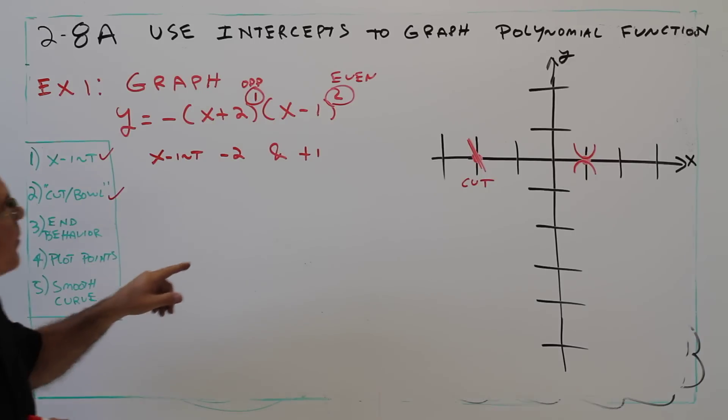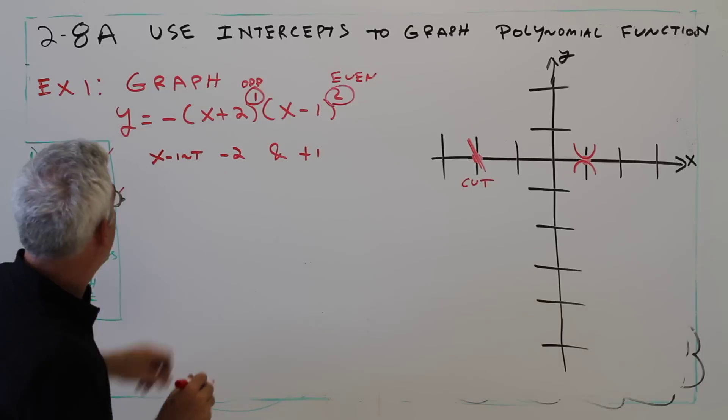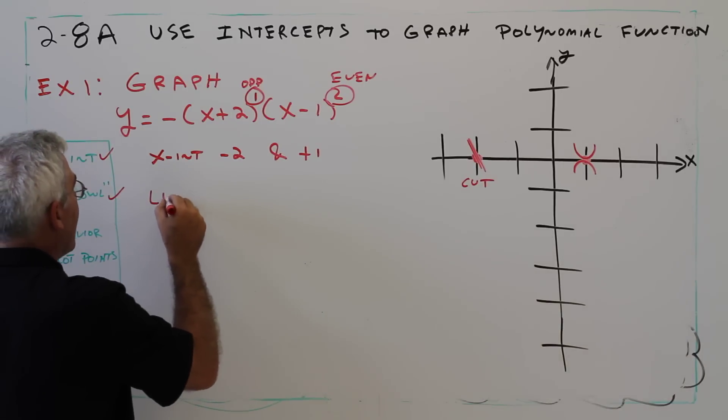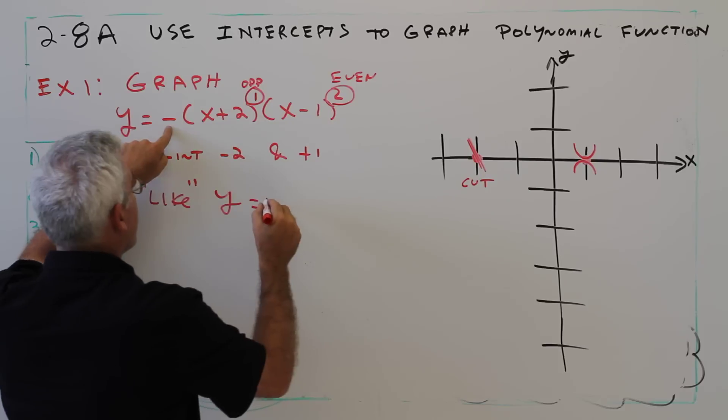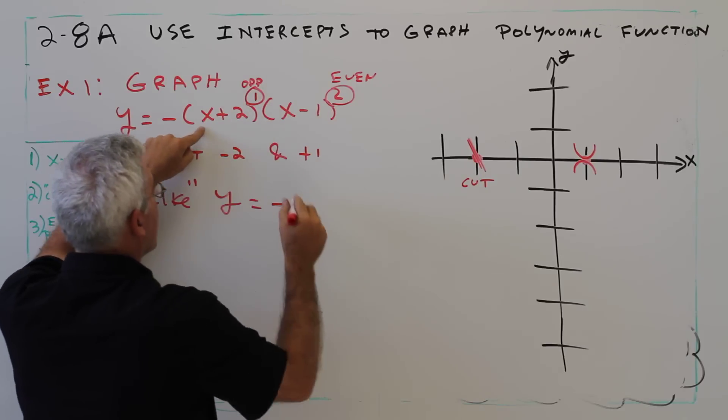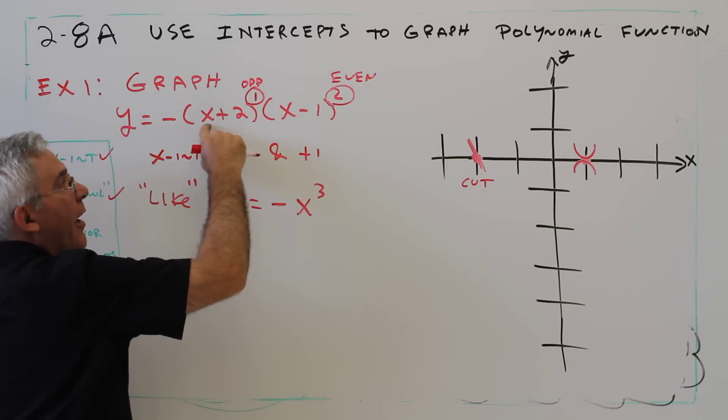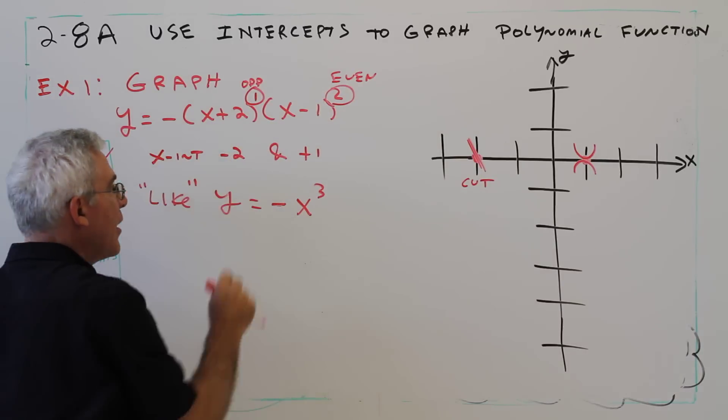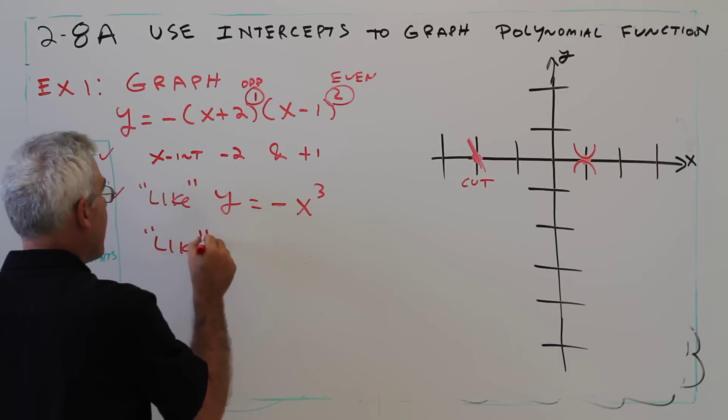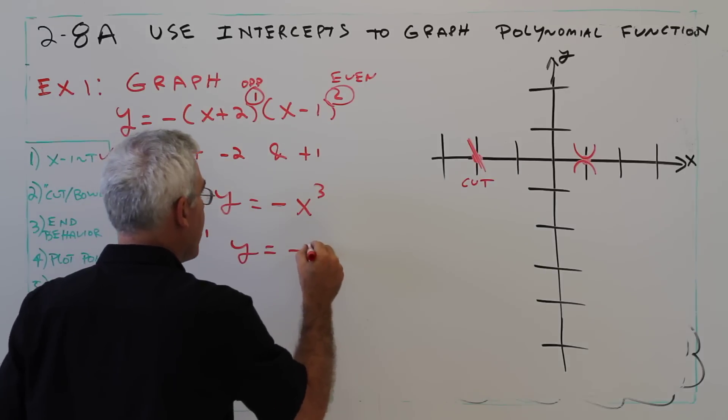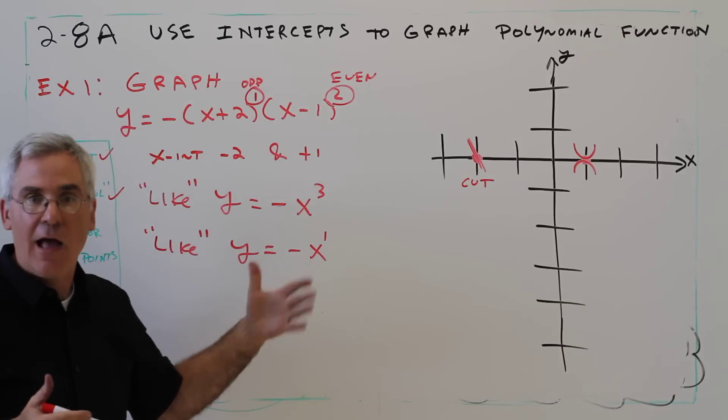If I were to multiply this out, I would find out it's just like y equals negative x cubed. I've got an x squared factor there and an x factor there and a negative. It's like y equals negative x cubed, which is like y equals negative x to the 1. It's negative and it's odd. That's what I need to know.